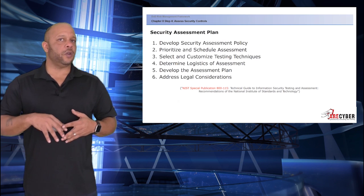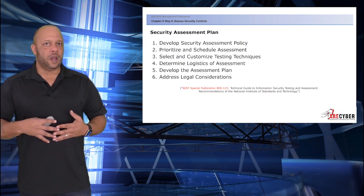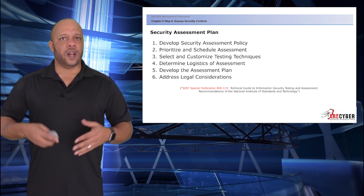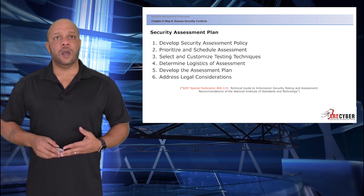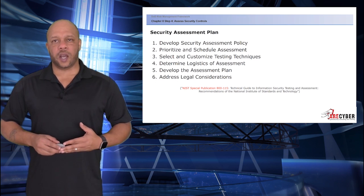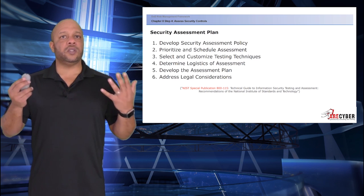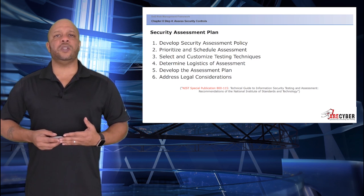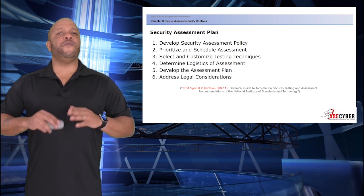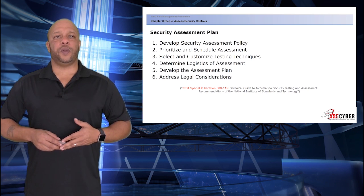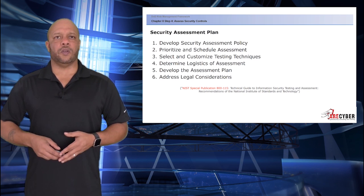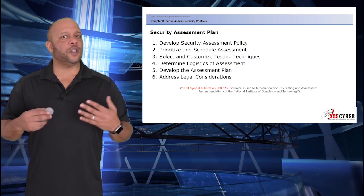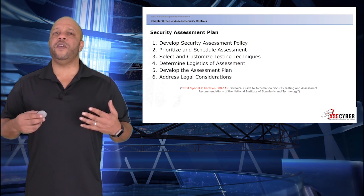When constructing the security assessment plan itself, there are six base operations: one, develop the security assessment policy; two, prioritize and schedule the assessment; three, select and customize testing techniques; four, determine logistics and assessment; five, develop the assessment plan; and six, address any legal considerations. You can find a more expansive explanation in NIST Special Publication 800-115.